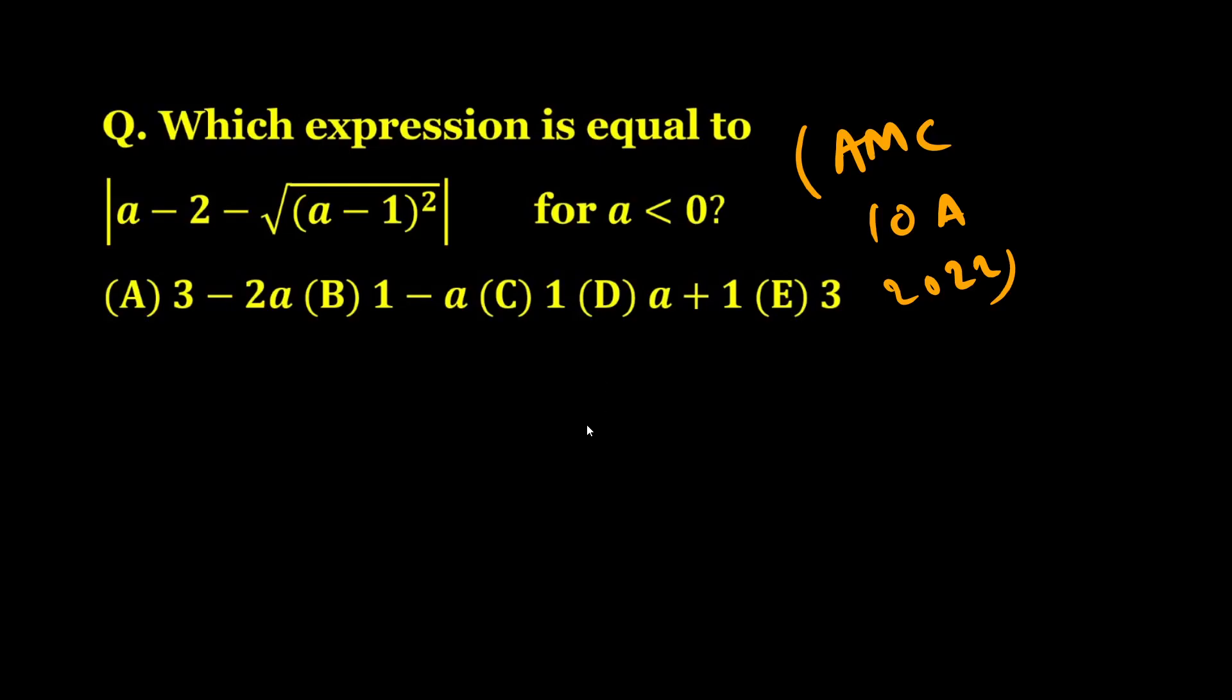Hi everyone, in this video we are going to solve a very interesting modulus problem taken from AMC American Mathematics Competition 10A 2022. The question asks: which expression is equal to |a - 2 - √(a-1)²| for a < 0? This constraint that a is less than 0 is the key point here.